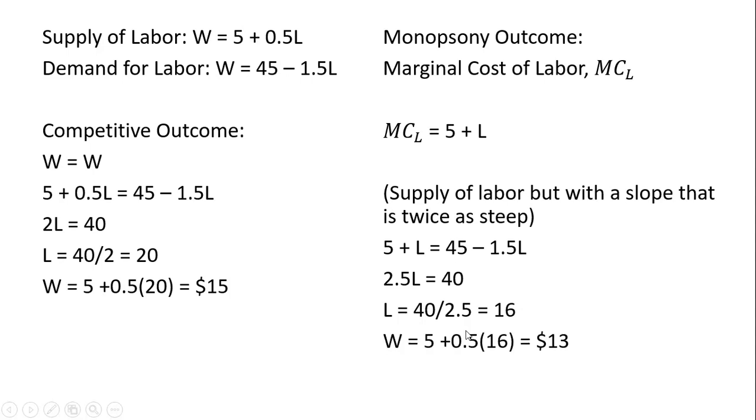And now to get the wage, we're going to take this 16, and very important here, we will plug it back into the supply of labor. We don't want to plug it back into the demand for labor or the marginal cost of labor. We only want to plug it back into the supply of labor. And here, if we do that, we get a wage of $13. If you were to plug this back into the demand for labor, the marginal cost of labor, you would get a wage that exceeds the competitive outcome.